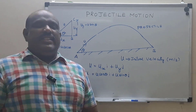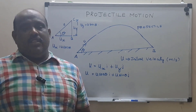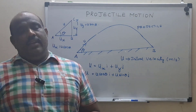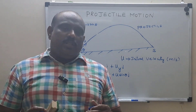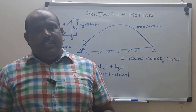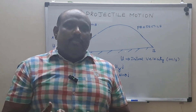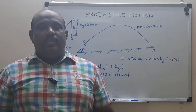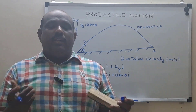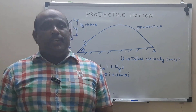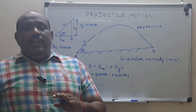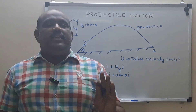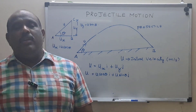Whether this initial velocity U will remain constant or will it vary? It will keep on changing. Why? Because the ball tries to go up but is attracted by gravity downward, and there is a force reducing its speed. So velocity keeps decreasing. The velocity U will not remain constant — it is a variable. At the initial position only it is constant; after that, the velocity keeps changing.